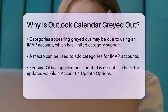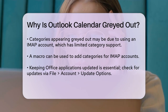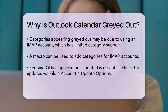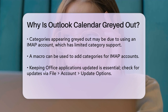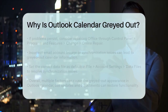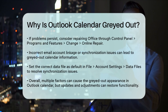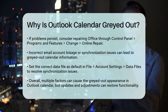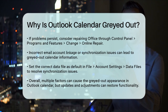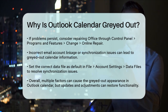Additionally, if your calendar is linked to the wrong email account or has other synchronization issues, you might see grayed out or incorrect information. To fix this, go to File, Account Settings, select the Data Files tab, and set the correct data file as the default. This ensures that the calendar events are associated with the right email account.